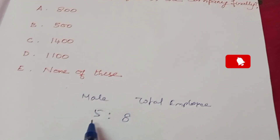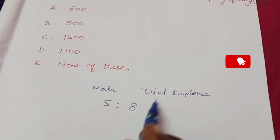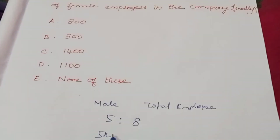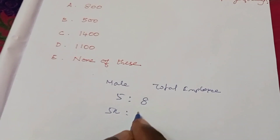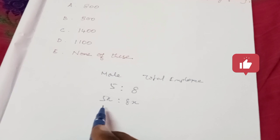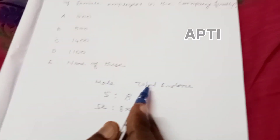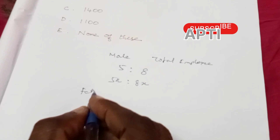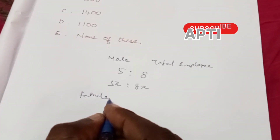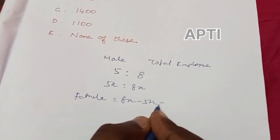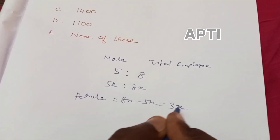So male employees are 5 shares and total employees are 8 shares. That means male employees are 5x and total employees are 8x. The number of female employees is 8x minus 5x, which equals 3x.